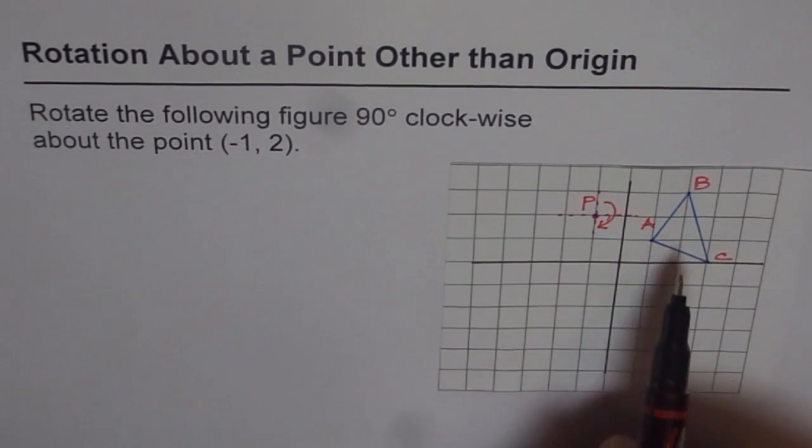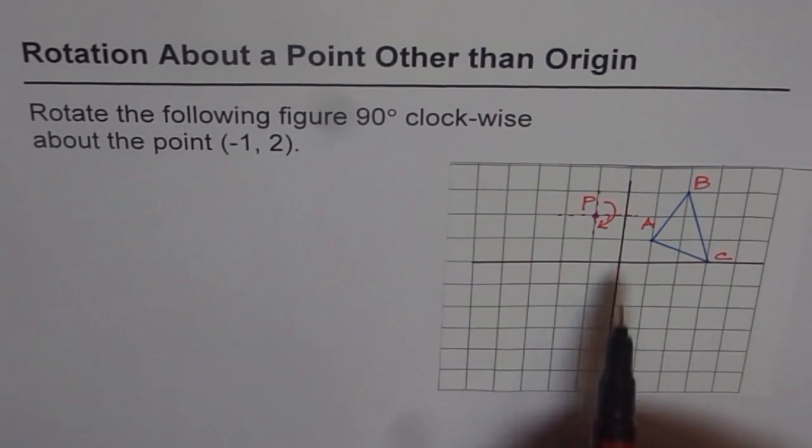But this time, the rotation is about a point which is not origin. How to do that?